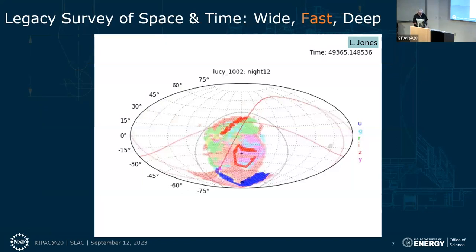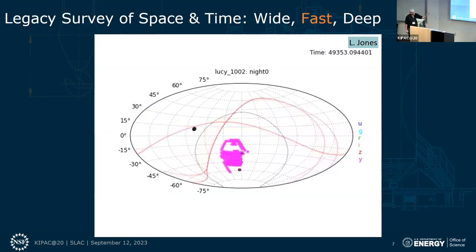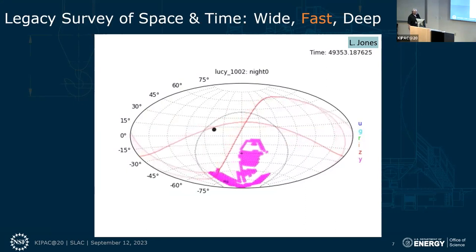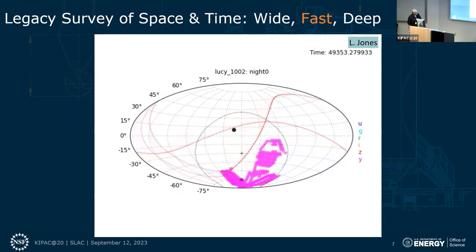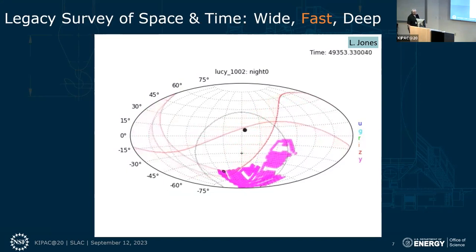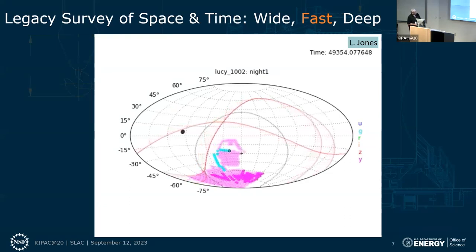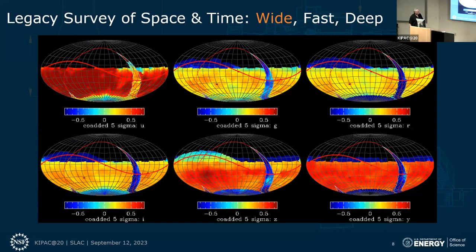Chi-Wei showed a more modern version of the survey strategy model. This is an old model — somewhat obsolete but the graphics are nice. You can see what you'd be doing: on night zero in Z-band, then jumping ahead to other bands, deep drilling fields, and so on. There's the second night, and we've changed filters — now at a deep drilling field. Summing it all up in six filters, this is the kind of depth and uniformity you'd be able to achieve.